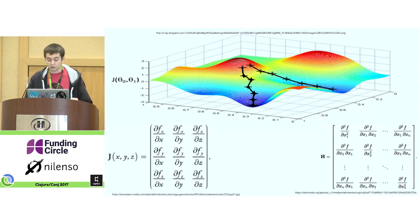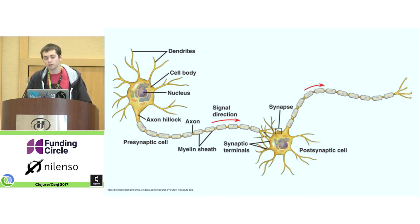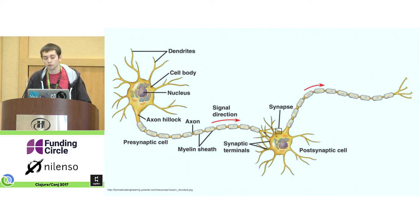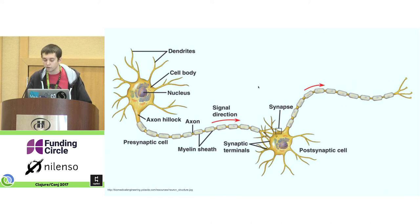Let's get to a more interesting topic: how does our brain actually learn? To get the necessary context, let's start with neurons, the building blocks of the brain. We can see here two neurons, one on the left and one on the right, that are talking to each other. The one on the left is the presynaptic cell and the one on the right is the postsynaptic cell. The presynaptic cell sends an electrical message through an axon to its neighbor — that is how they communicate.